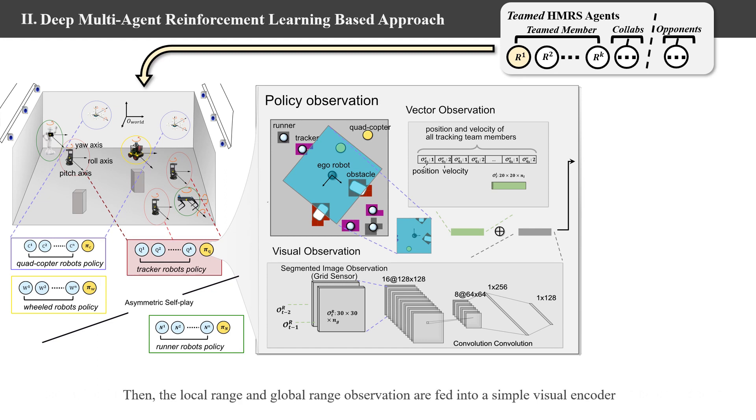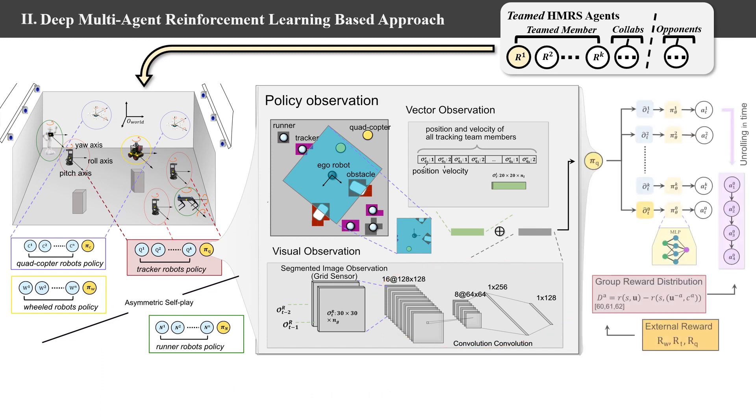Then, observations are fed into a simple visual encoder. Together they form the latent space observation for each agent. The joint latent space observations of all robots are fed into policy networks and generate the corresponding action vector for each robot during planning, which enables collaborative catching behavior of all the robots in the catching team.